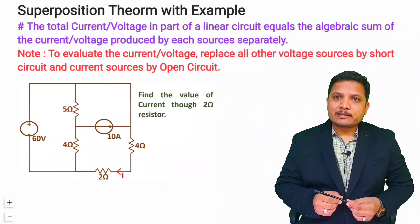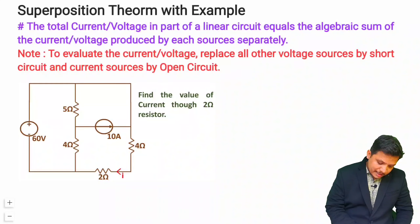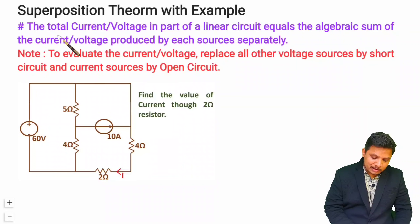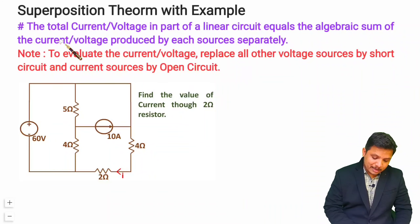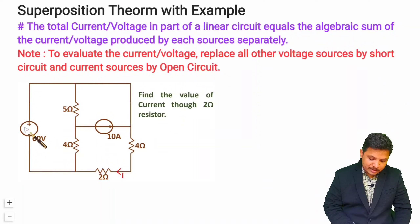Let us first see what the basic theorem is. The superposition theorem is used to identify voltage or current through any linear element. The total current or voltage in a part of a linear circuit is equal to the algebraic sum of currents or voltages produced by each source separately. For example, here we have a circuit with a 60V battery and a 10A current source.